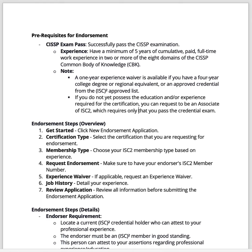When talking about the endorsement, you're going to have to go to ISC Squared and register with them. They'll have a place for you to complete the endorsement application. There are really seven steps you need to go through. The first is you have to click the endorsement application to start the process. Then you'll go through icons asking what certification type you're going for — is it the CISSP, or the CISSP with various caveats? You'll have to select that.